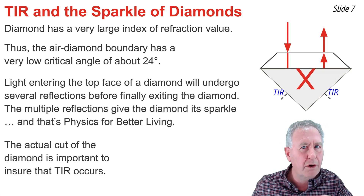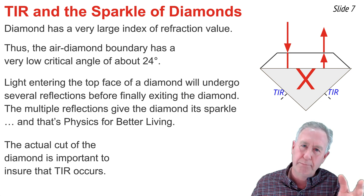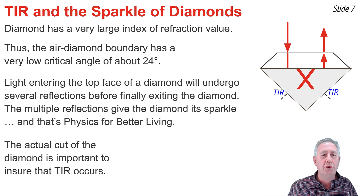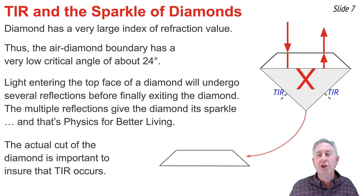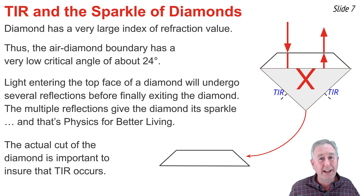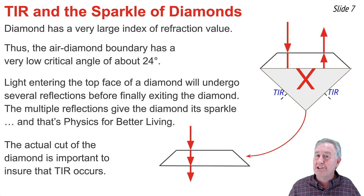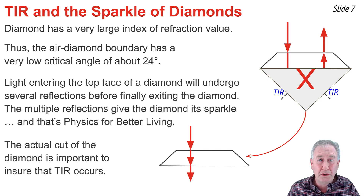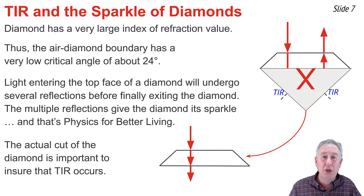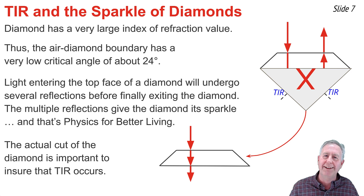Don't go there. But maybe you do, and you come home with a diamond gemstone with the bottom removed. Light enters the top face, approaches the bottom boundary, exits the diamond — no total internal reflection, no sparkle, no physics for better living.